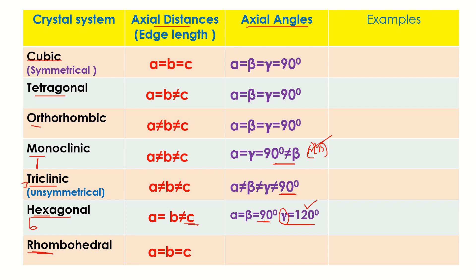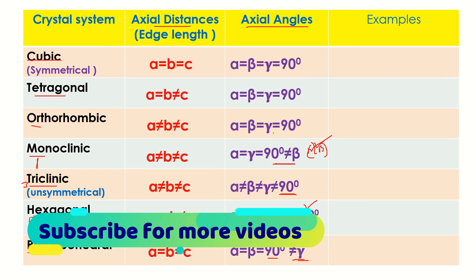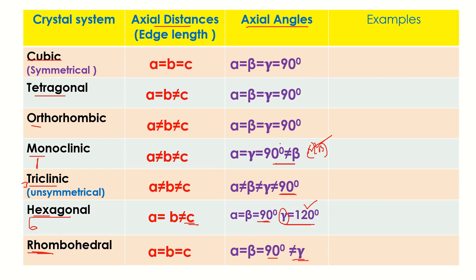Rhombohedral is quite opposite to monoclinic. In monoclinic, beta is not equal to 90°, whereas in rhombohedral, gamma is not equal to 90°. So for rhombohedral: alpha = beta = 90°, but gamma ≠ 90°.